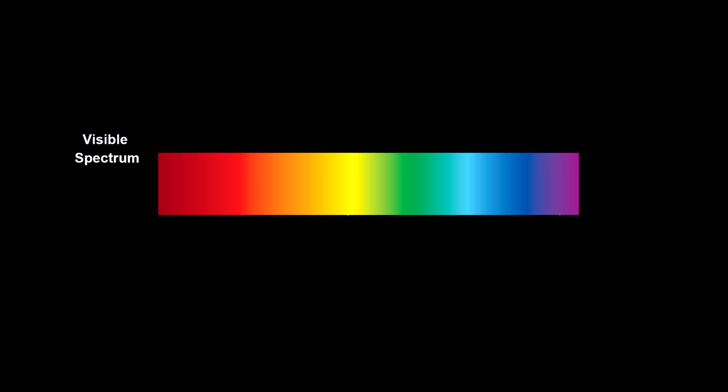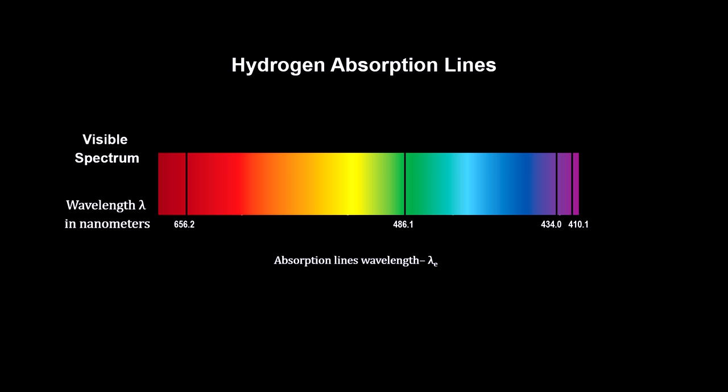The same effect works for light. Here we have the visible spectrum from a star. Hydrogen in the star's atmosphere creates absorption lines with a unique pattern. Here's the pattern for a star at rest with respect to the observer.